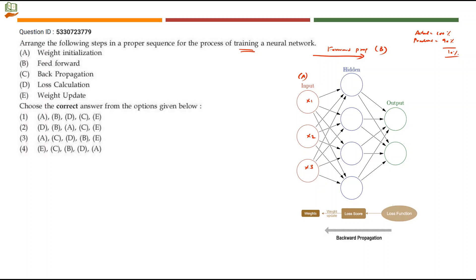Training is when you are repetitively working towards achieving 100% of the output. Every time the predicted output is compared to the actual output, and based on the difference it keeps training itself — training in the sense, learning. This loss function or loss score can be equated to D (loss calculation). Once you calculate the amount of error, that value goes to backward propagation — step C. Once the loss is propagated backward, the weights are automatically updated — step E. So the order will be A, B, D, C, E.